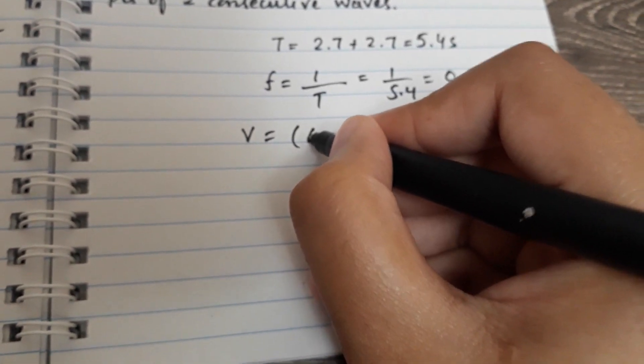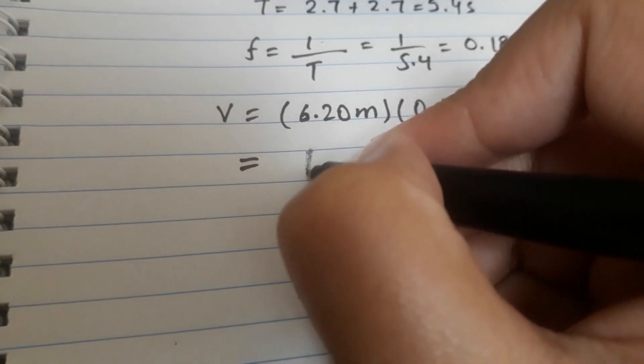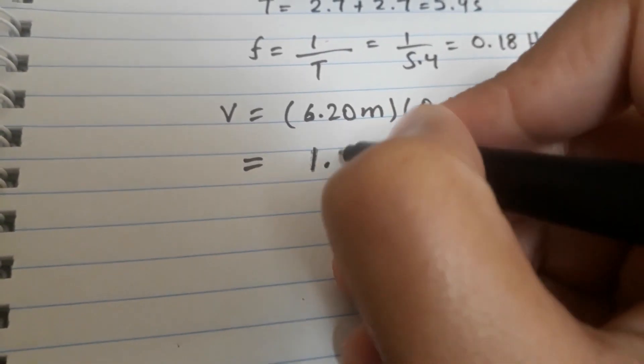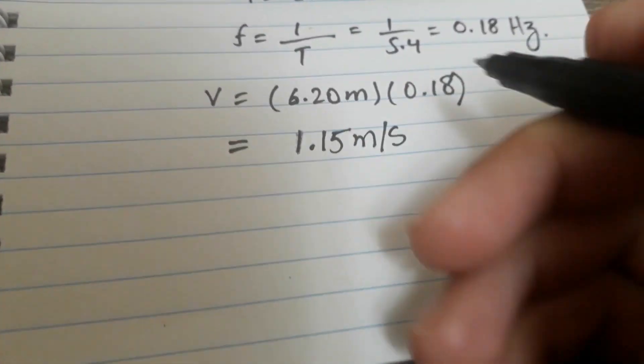Using this value and the given wavelength, I can find out my speed, which is going to be 6.5 meters times 0.18, which equals 1.15 meters per second.